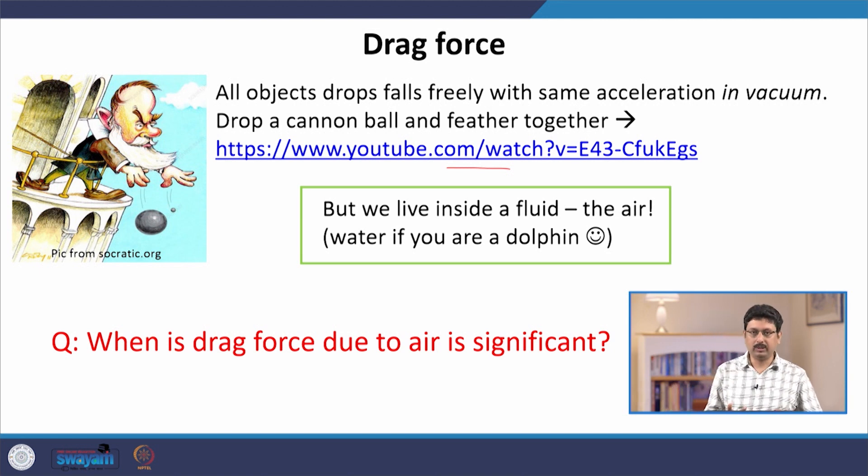But in normal situations in real life, we live inside a fluid — we are surrounded by air — and this air produces some friction. We are always feeling this frictional force due to air, and this frictional force is more on the feather because of its higher surface area compared to a cannonball, which is more compact. Hence, the net acceleration due to the combined force of drag and weight is greater for the cannonball versus the feather.